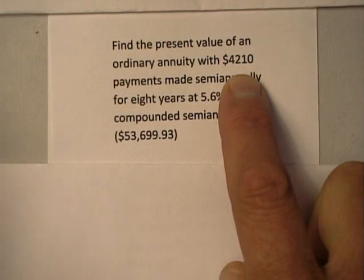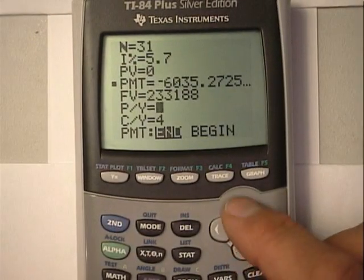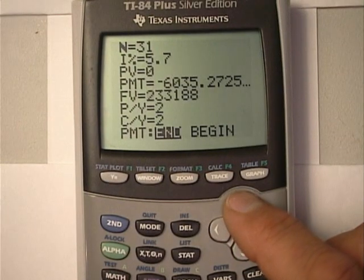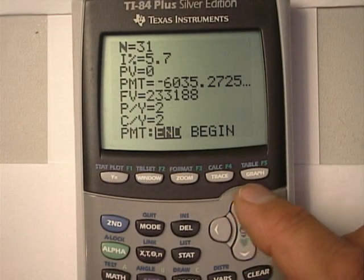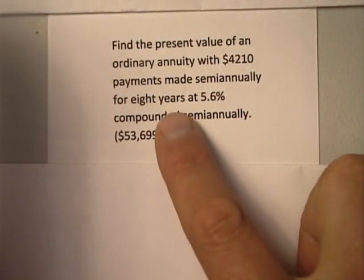I got payments of $4210. They're made semiannually, so I need to set that at two, and the payments are $4210, and it's for eight years.